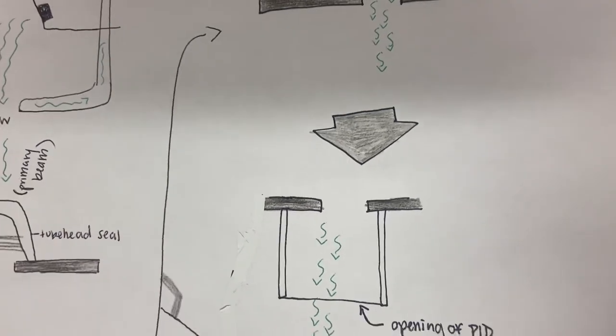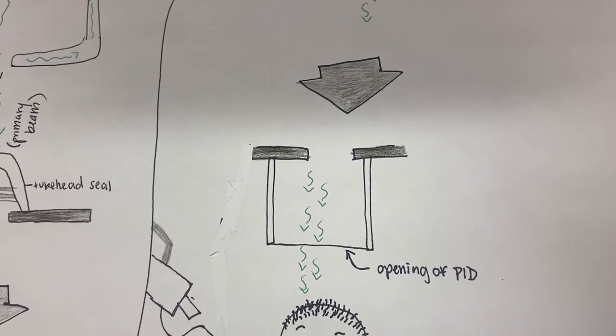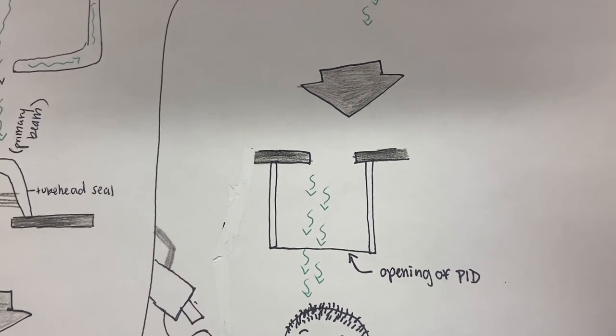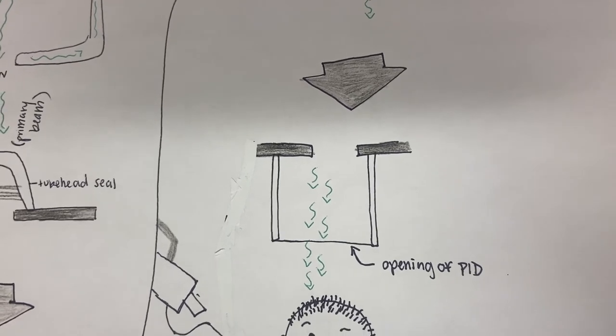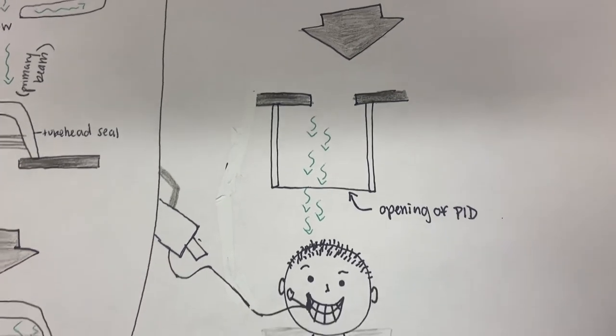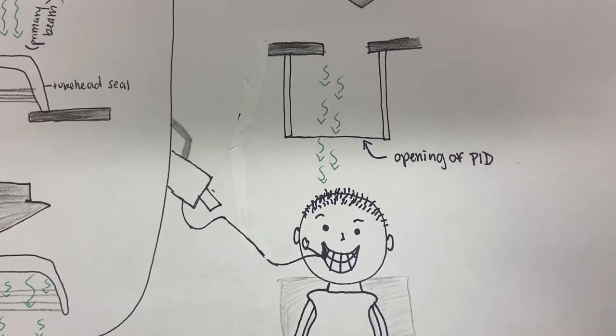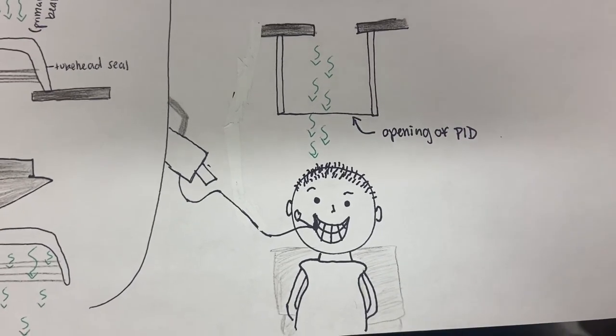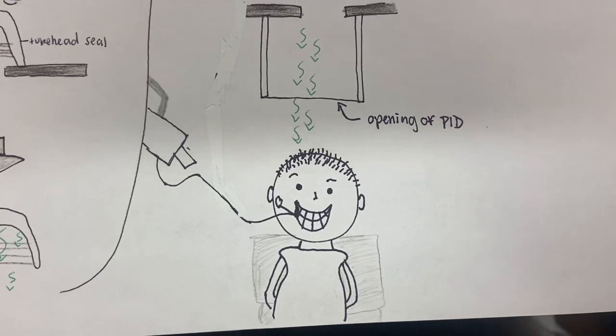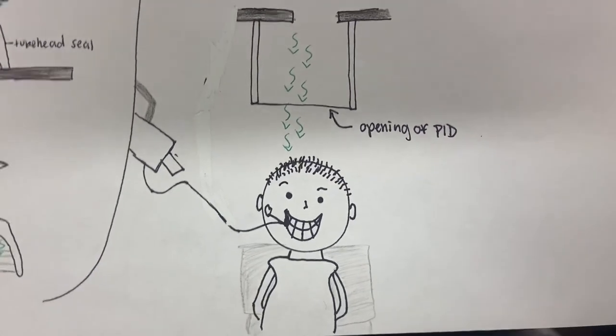Finally, the beam will exit the tube head and travel through the PID, or position indicating device, and go through the opening. Then, the X-rays will lastly be directed towards the film or the sensor in the patient's mouth. And there is how you get the production of dental X-rays.